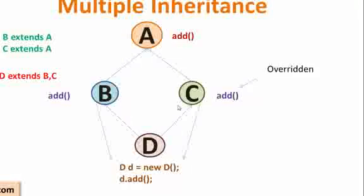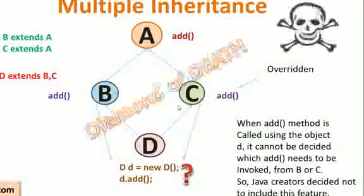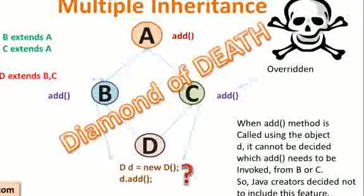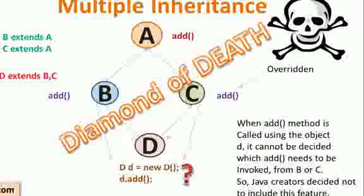So this is called the diamond of death. You can see that the shape is diamond. For this reason, Java creators have decided not to let multiple inheritance inside Java, because it creates a lot of problems even while designing the application.